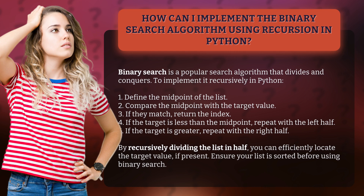5. If the target is greater, repeat with the right half. By recursively dividing the list in half, you can efficiently locate the target value, if present. Ensure your list is sorted before using binary search.